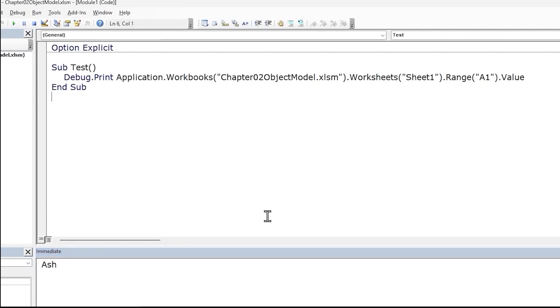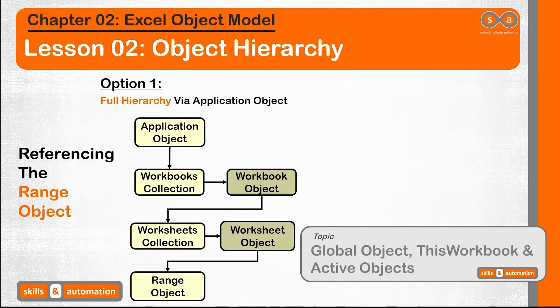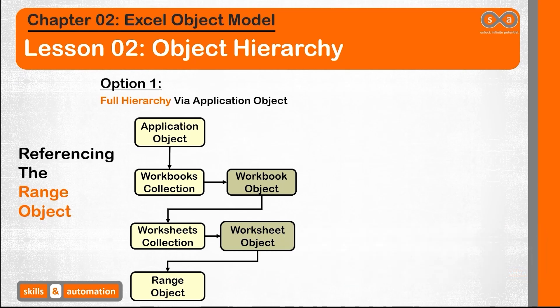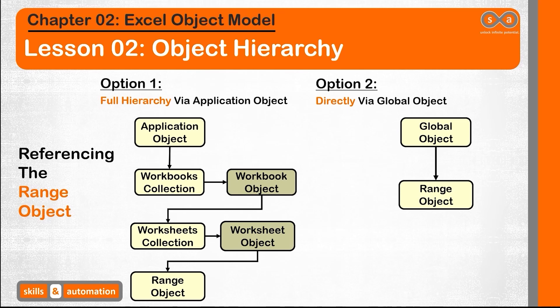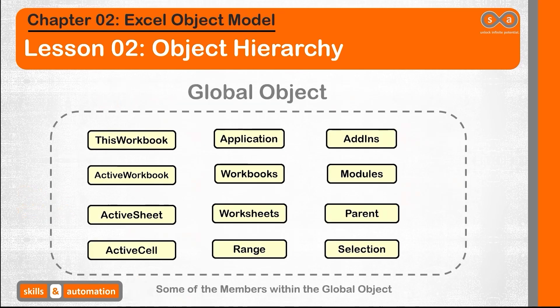For the rest of this video, we will look at different ways to shorten this reference. Till now, we have assumed that the Excel object hierarchy follows a single path — that if we want to get to the range object, there is only one fixed path. This is a false assumption; there can be more than one way to access an object. The Excel object library provides a global object with several members, including the application object. Any member shown in this global list can be directly accessed without needing to mention the application object.